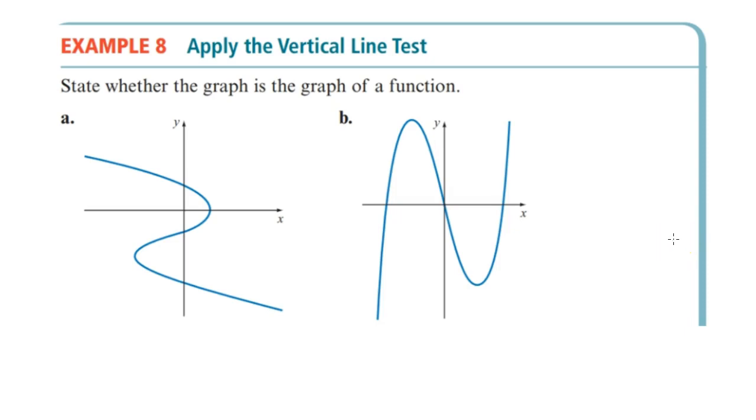The vertical line test is defined in the textbook, but the idea is if you imagine a vertical line going across horizontally across the graph, and if your vertical line crosses the function, the graph of the function, in more than one place at any instance, it is not a function.